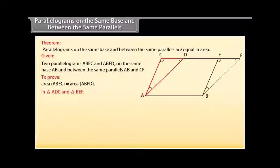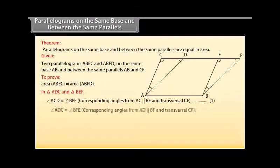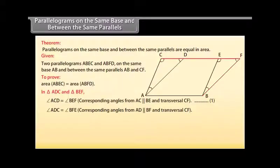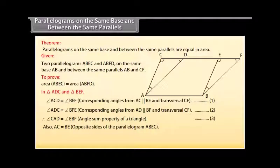In triangle ADC and triangle BEF: angle ACD is equal to angle BEF, because these are corresponding angles from AC parallel to BE and transversal CF. [Mark as 1.] Angle ADC is equal to angle BFE, because these are corresponding angles from AD parallel to BF and transversal CF. [Mark as 2.] Therefore, angle CAD is equal to angle EBF by the angle sum property of a triangle. [Mark as 3.] Also, AC is equal to BE, as opposite sides of parallelogram ABEC. [Mark as 4.]